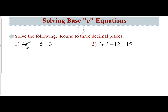So if I have 4 times e to the negative 2x minus 5 equals 3, when solving for x, we have to isolate the object that our variable is contained in — we have to isolate this e to the negative 2x power. We get rid of any addition or subtraction occurring outside of that first, so we're going to add 5 to both sides. That gives me 4 times e to the negative 2x power equals 8.